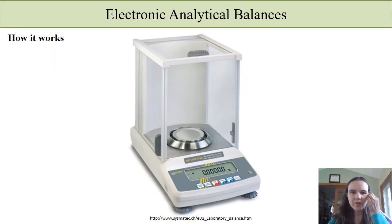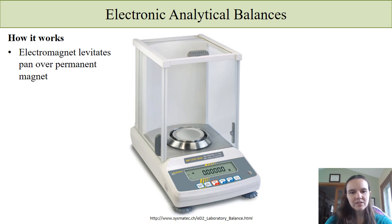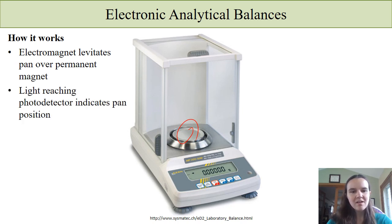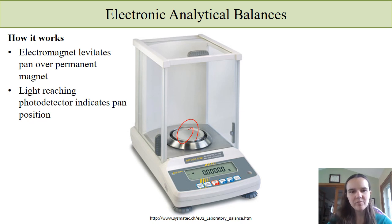The electronic balance is one of the most common pieces of equipment that you'll use and it's important to understand how it works. You have the sample pan in the center here, and it's levitated in space using an electromagnet above a permanent magnet, so there's an interaction between these two magnets. On the inside there's a light that reaches a photodiode detector, and the amount of light seen indicates the pan position — how high or low it is — and therefore how much mass there is.